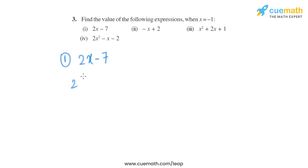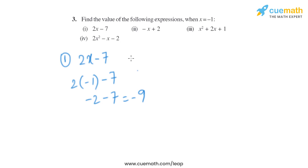So it will become 2 into minus 1, minus 7, which is the same as minus 2 minus 7, which equals minus 9. Now let's move on to the second part. The expression given is minus x plus 2.